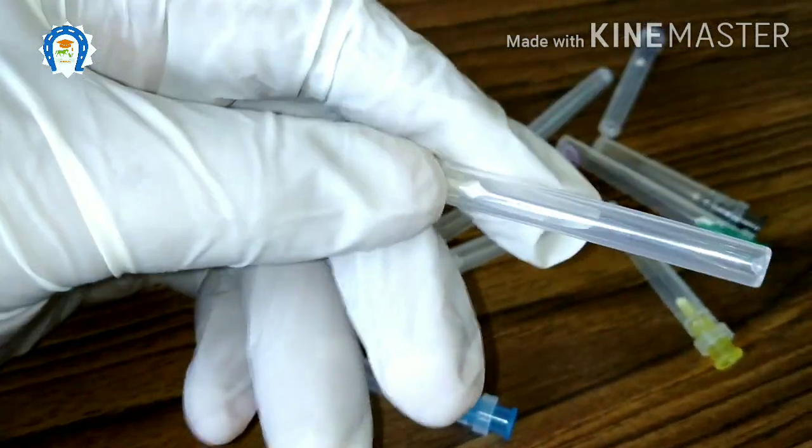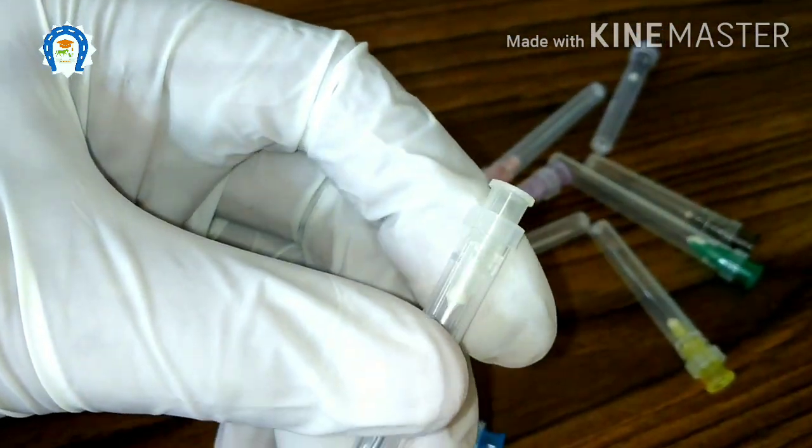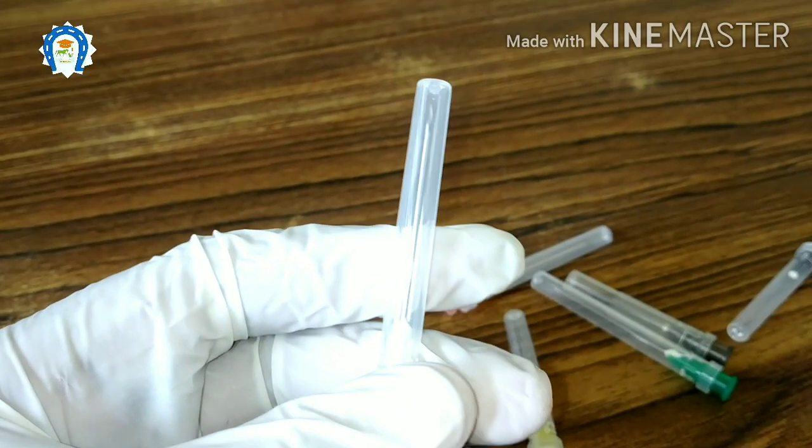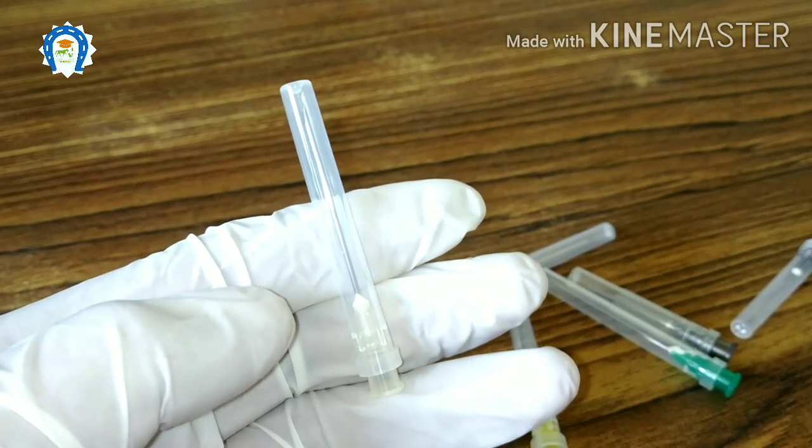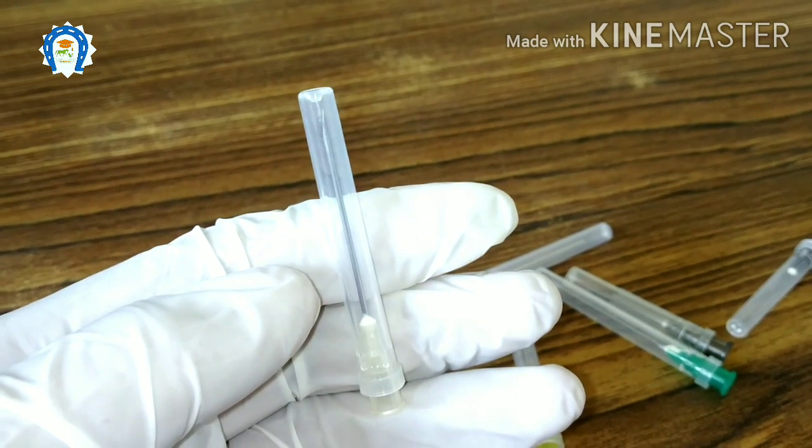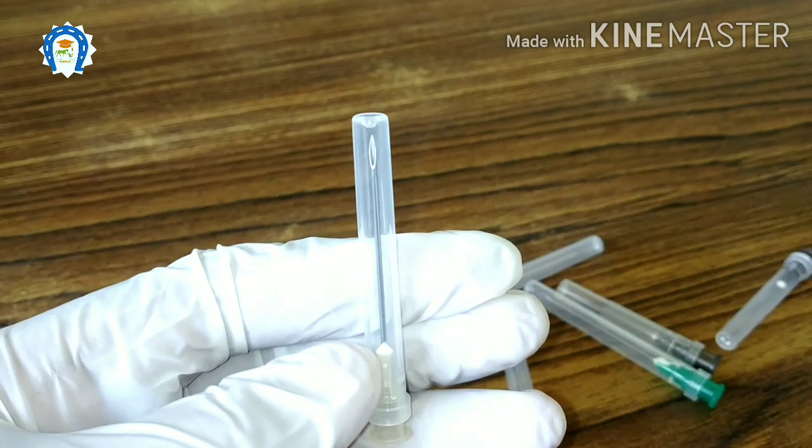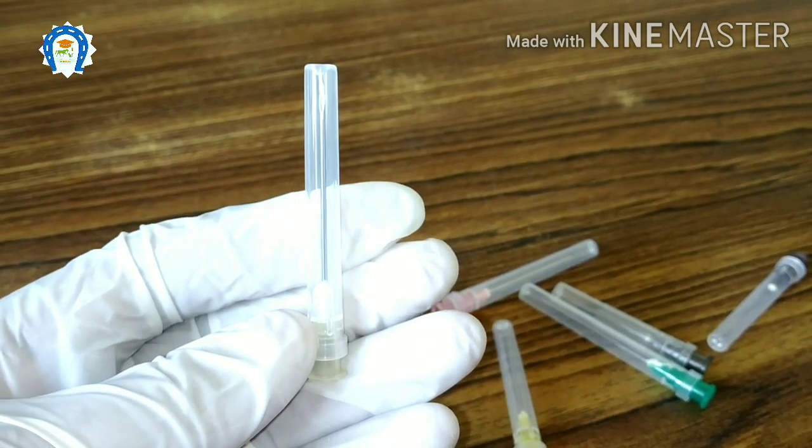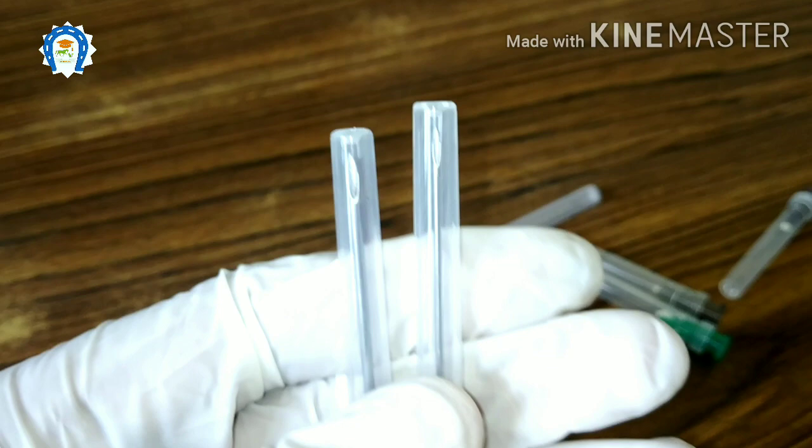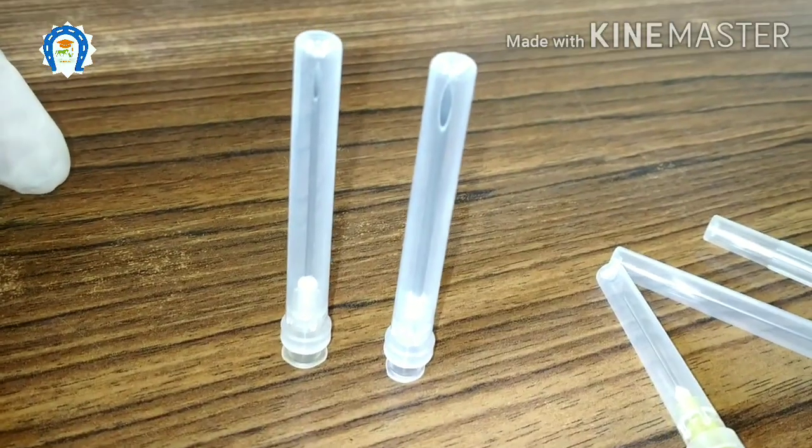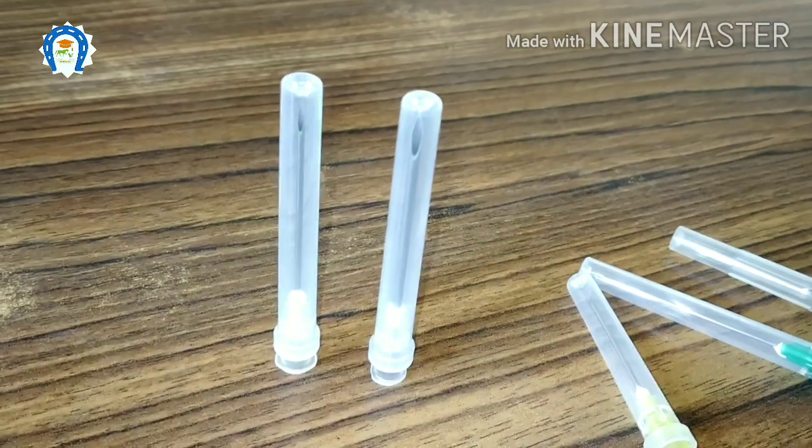This one is the 19 gauge needle, slightly dull white. We can use this for intramuscular and intravenous injections in large animals. This is not too big or too small, very ideal to administer injections in large animals. Most of the water-based injections can be administered with this needle. We have to be very careful because we may get confused with the 16 gauge needle, which is also white in color, but this is a little dull.